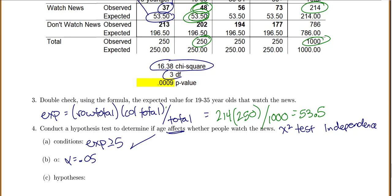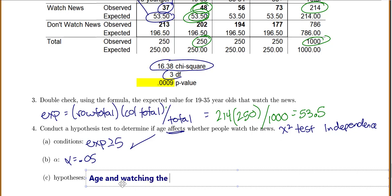For your hypotheses, the null hypothesis is always that they are independent, so age and watching the news are independent. That is always the null. So the null is age and watching the news are independent, meaning they do not affect each other.